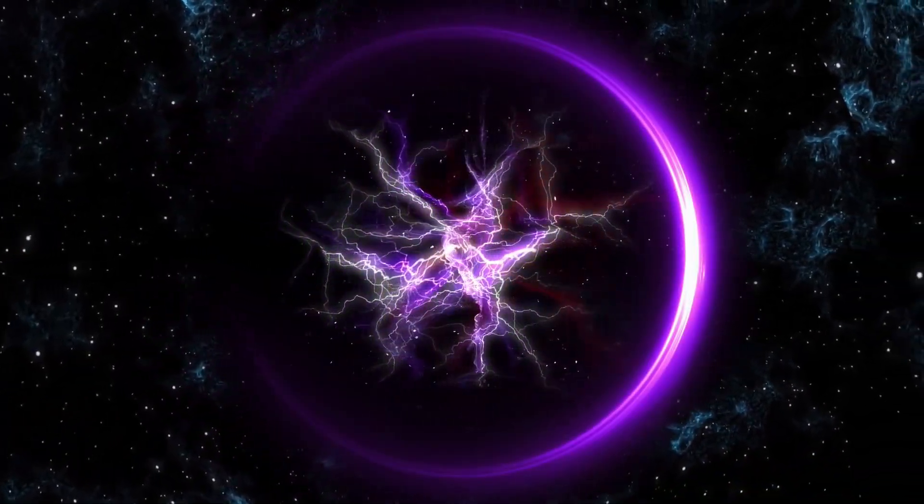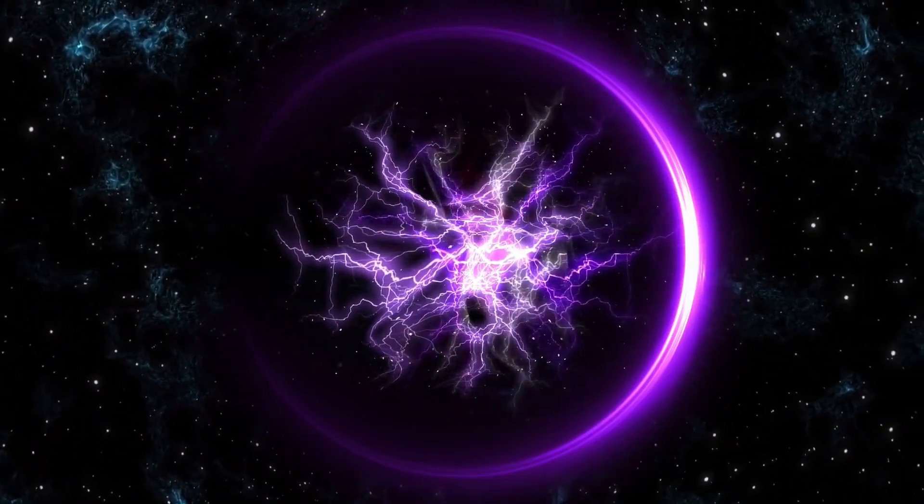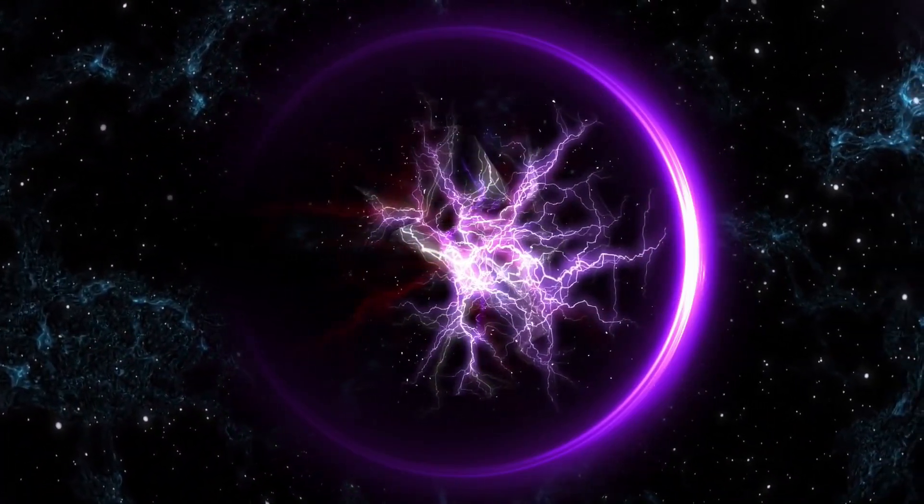Despite appearing as a single star to the naked eye, the Beta Orion system consists of at least four components, designated as Rigel-A, Rigel-VA, Rigel-VB, and Rigel-C.